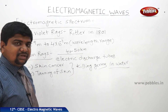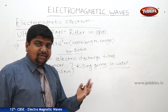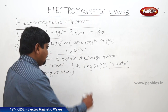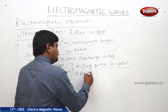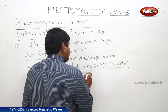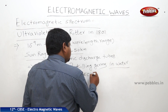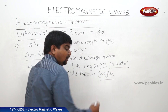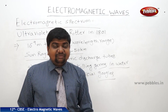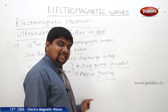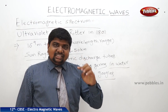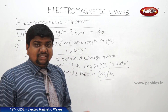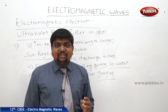One more example of ultraviolet rays is the rays coming out of welding. If you observe welders, they will have special goggles or face masks made with a glass window. The radiation coming out of the welding process is UV radiation, which has a short wavelength and causes damage to the eyes.